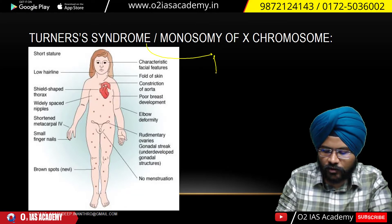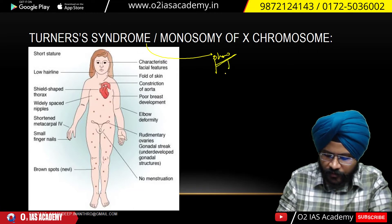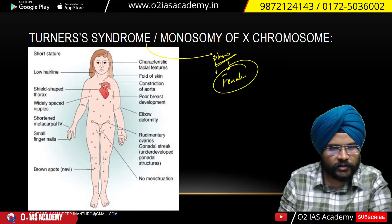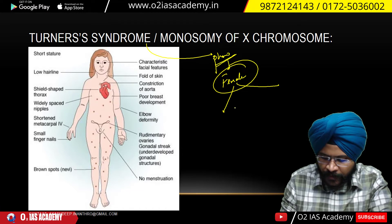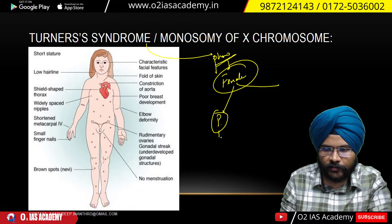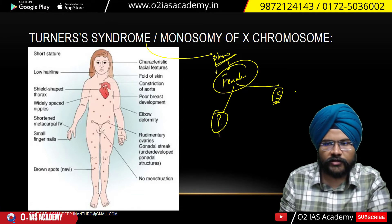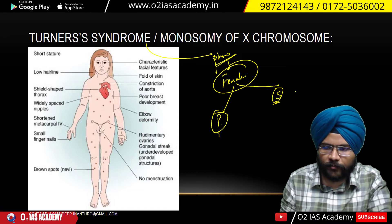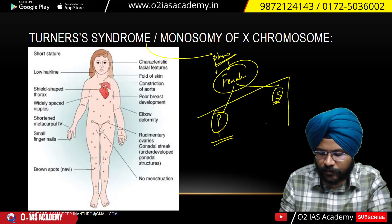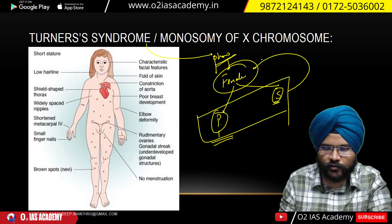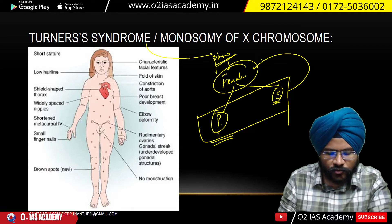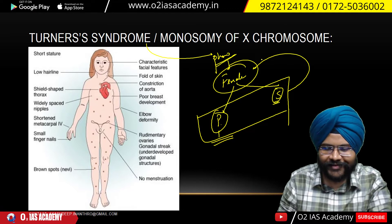In Turner syndrome, phenotypically the person is female. Phenotypically, which means in terms of characteristics: primary characteristics — the presence of vagina is there. Secondary characteristics — the formation of breast, although the breast is underdeveloped; the nipple formation and breast development don't happen properly. Phenotypically she is female — these are the symptoms of Turner syndrome.